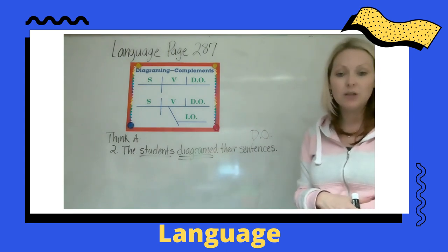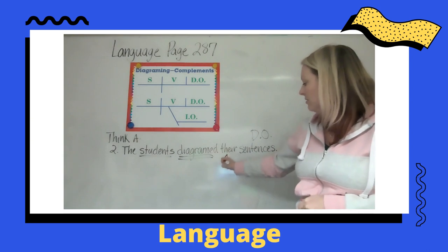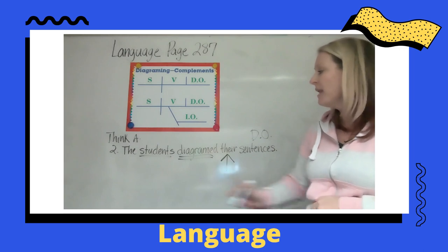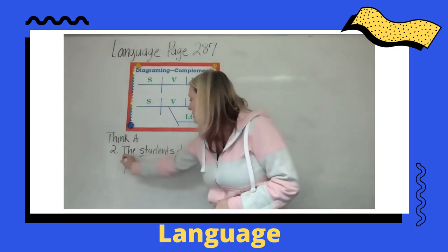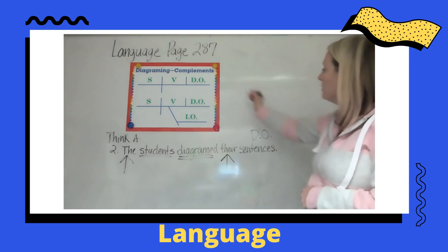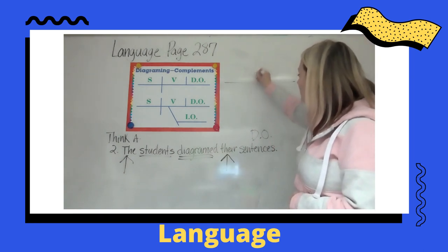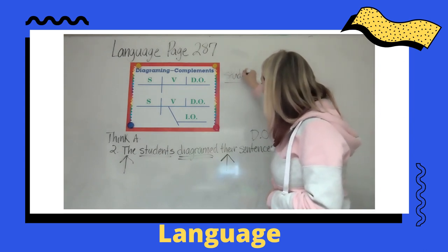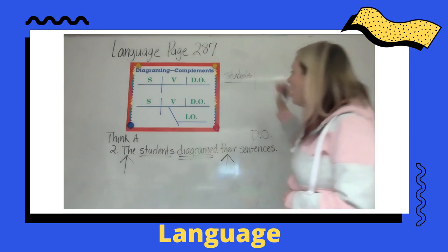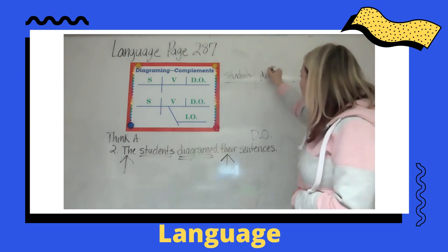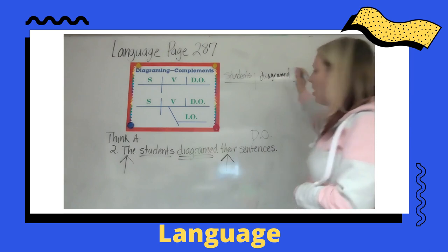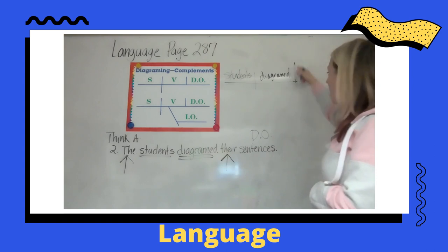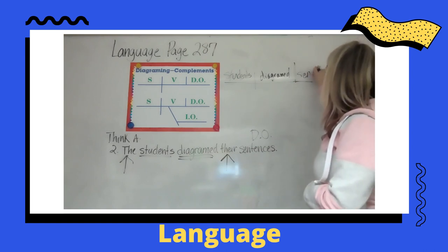The sentences is our direct object. Then 'their' — which sentences? Their sentences — that's an adjective. And which students? The students — that's an adjective too. So when we diagram, we put students on the left and diagrammed on the right, then after diagrammed we put our horizontal line and do sentences.